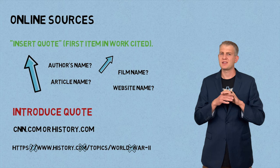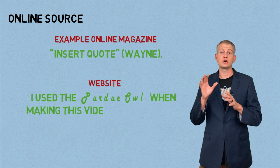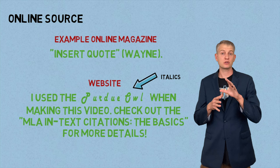If you're citing an online magazine, have the quote and then in parentheses the last name of the author. But when citing an actual website, you don't use a parenthetical citation — there are no parentheses. Notice the website name is in italics because it's a longer work, and the article name is in quotes because it's a shorter work.